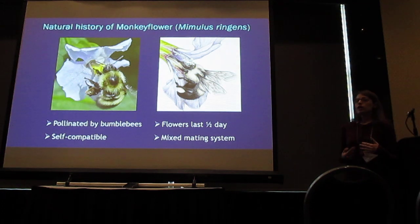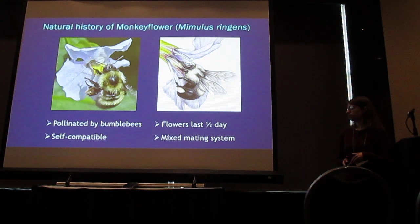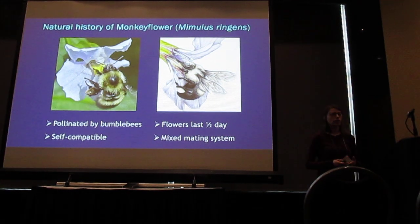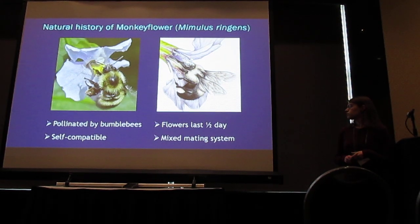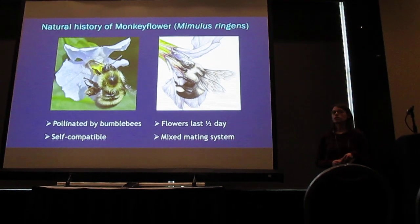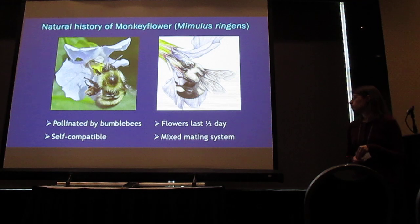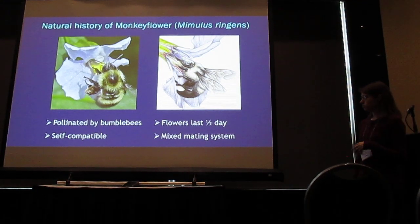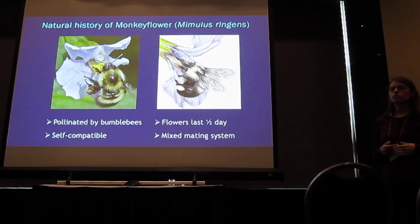I am studying mating system evolution in monkeyflower, Mimulus rhyngens. It is a hermaphrodite perennial plant native to wetlands in eastern and central North America. It is primarily bumblebee pollinated, and plants produce purple flowers, each of which lasts for only half a day. The species is wholly self-compatible and monkeyflower exhibits a mixed mating system.